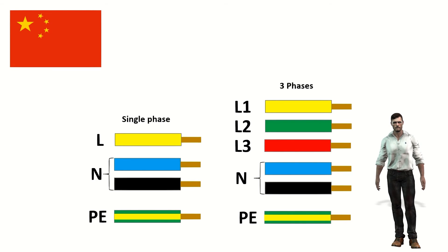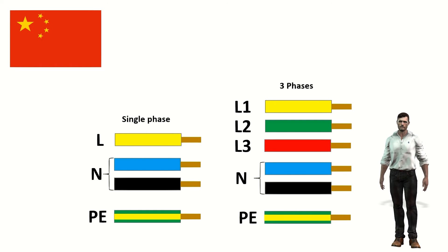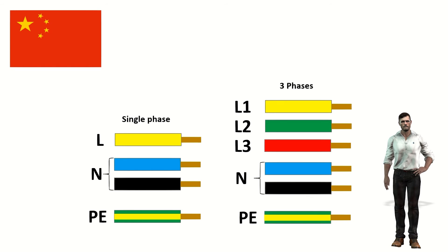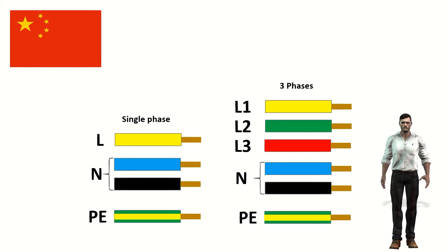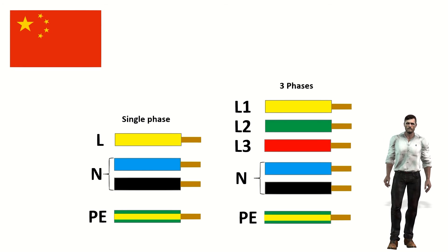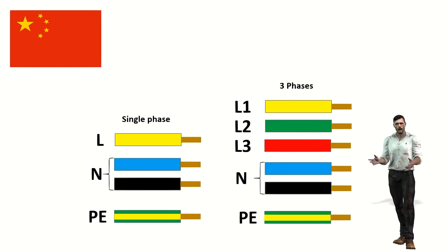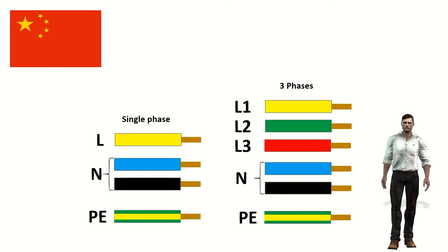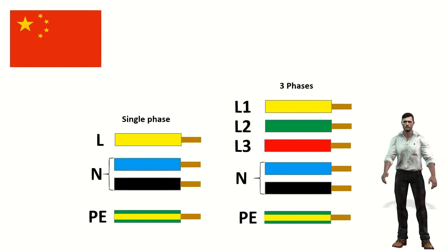China has its own color code. For single-phase systems, the phase cable (L) uses the color yellow, and for the neutral cable (N), the color light blue or black is used. The earth or protection wire (PE) will be green and yellow. For a three-phase AC system: phase 1 (L1) is yellow, phase 2 (L2) is green, and phase 3 (L3) is red. The neutral (N) can be blue or black, and for the earth or protection wire (PE), green with a yellow line is used.